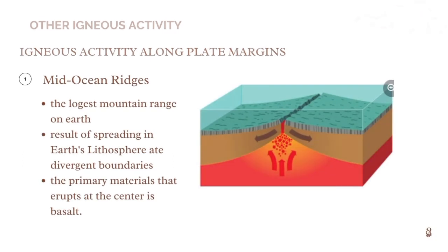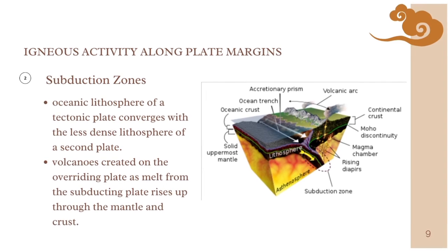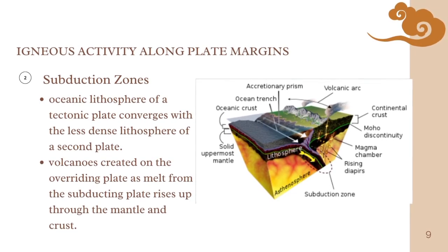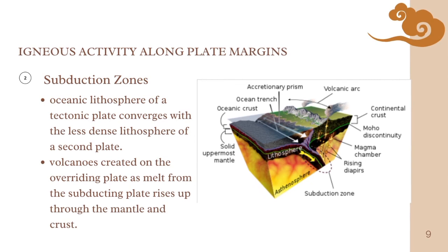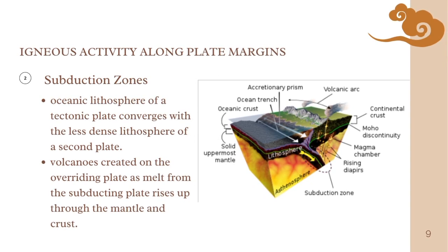Because this spreading occurs on a sphere, the rate of separation along the mid-ocean ridge varies around the globe. In places where spreading is fastest — more than 80 millimeters or 3 inches per year — the ridge has relatively gentle topography and is roughly dome-shaped in cross-section. The second type is the subduction zone, where the oceanic lithosphere of a tectonic plate converges with the less dense lithosphere of a second plate. The heavier plate dives beneath the second plate and sinks into the mantle. Subduction zone volcanoes are created on the overriding plate as melt from the subducting plate rises up through the mantle and the crust.